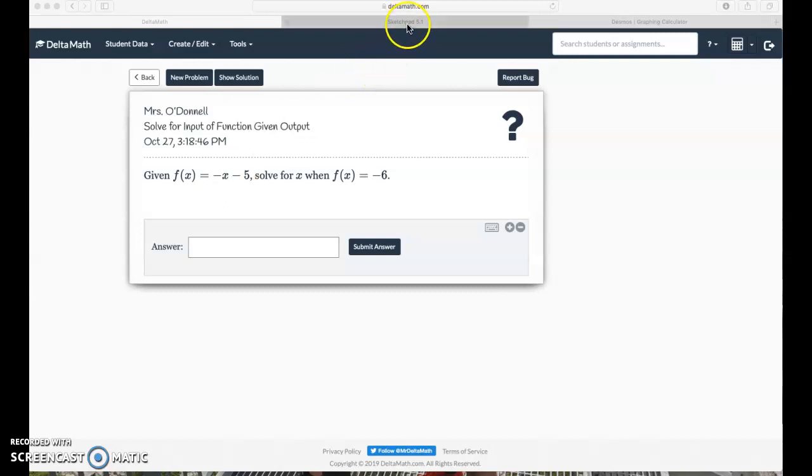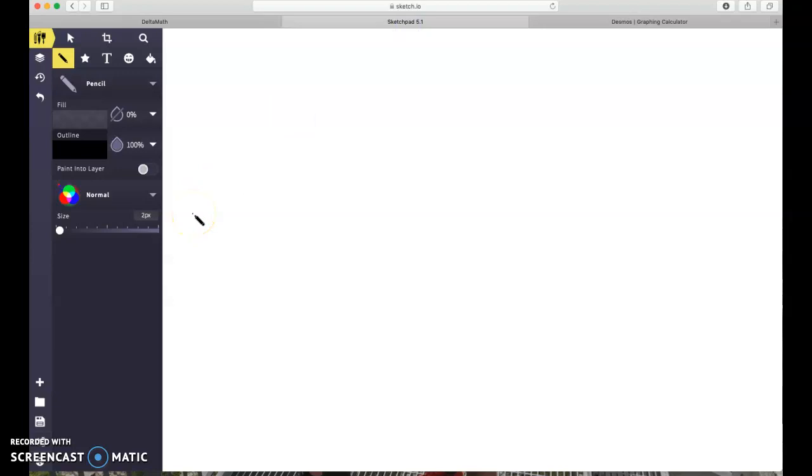Okay, and this one you might be able to do in your head, but let's just go ahead and do it on paper anyway. So f(x) equals, what is it, negative x minus 5. And I know they're asking me to find when f(x) is negative 6, right? Okay, so now I'm going to do my inverse operations to solve to get x all by itself, right? So I'm going to do SADMEP